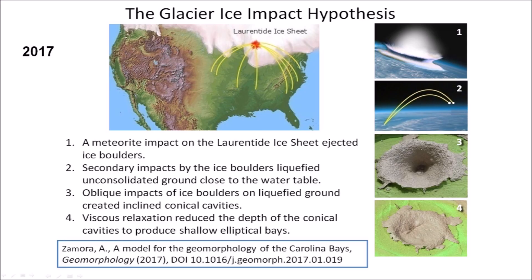In 2017, I published the Glacier Ice Impact Hypothesis in a peer-reviewed journal. The hypothesis proposes that an extraterrestrial impact on the Laurentide Ice Sheet ejected pieces of glacier ice in ballistic trajectories, and the secondary impacts of the ice boulders liquefied the ground and created inclined conical cavities that transformed into shallow elliptical basins after viscous relaxation. The paper included pictures of some experimental impacts that illustrated the impact mechanisms.